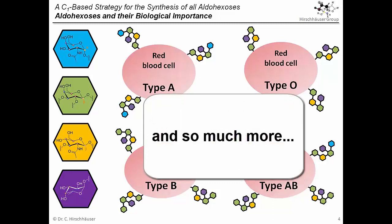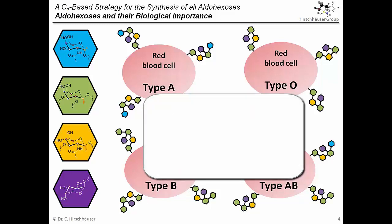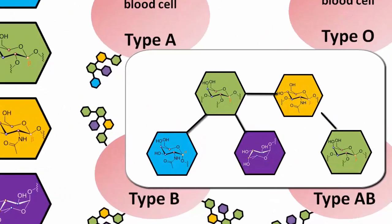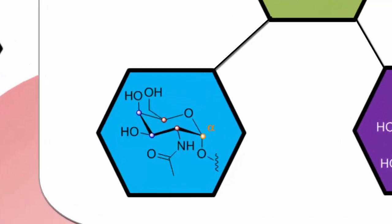Given the huge number of recognition processes in the body, scientists are still working on unraveling this so-called glycocode. And since we are dealing with very small amounts in complex biological mixtures, we don't only need state-of-the-art analytical methods, but also the ability to synthesize these compounds. Nowadays, there are some really cool and even automated methods for joining monosaccharide building blocks together. But for that you still need the appropriate monosaccharide itself.